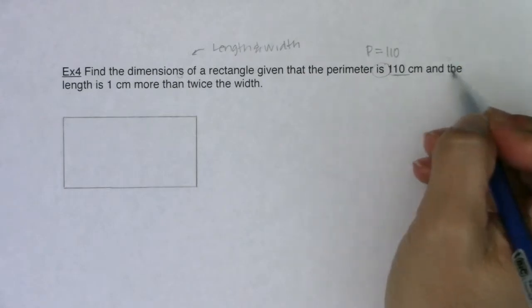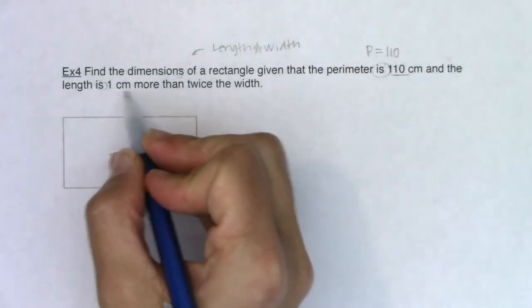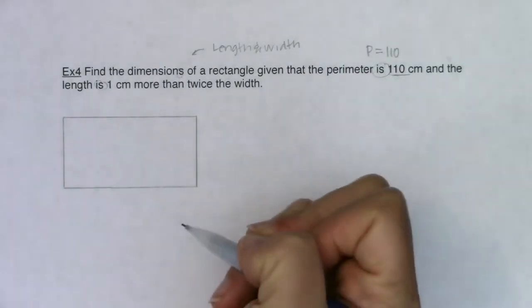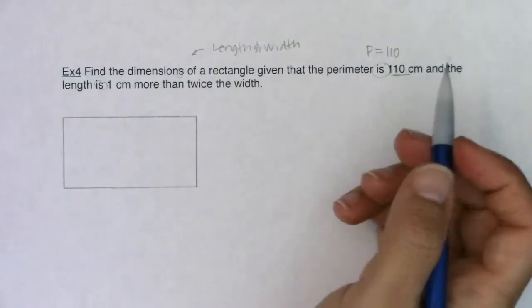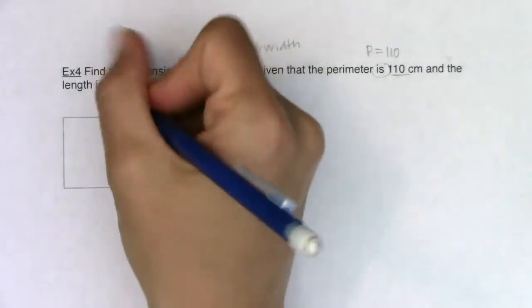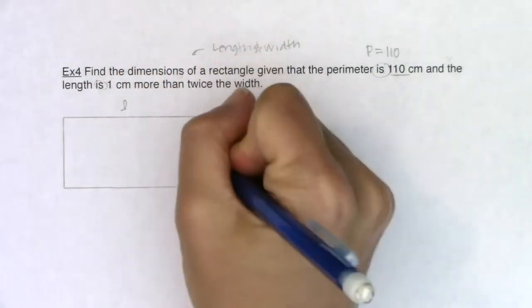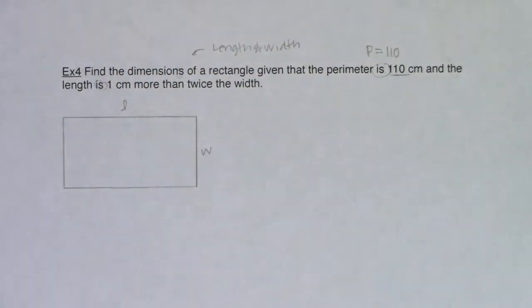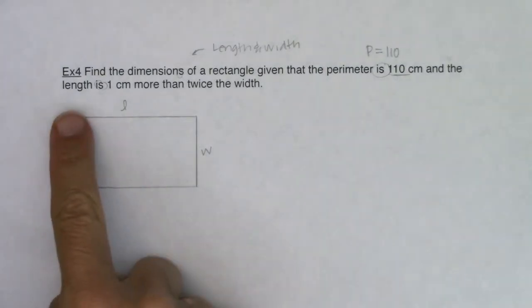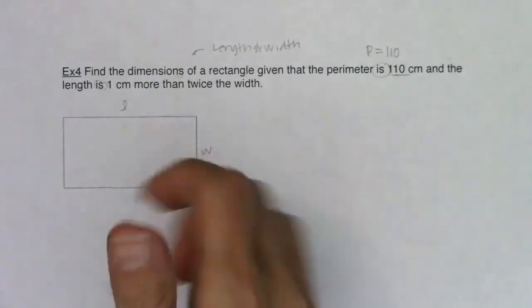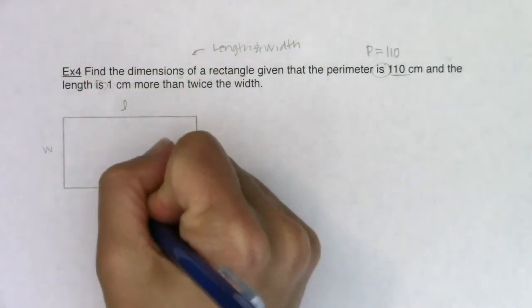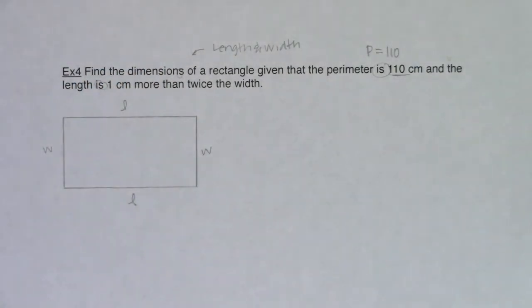And it says the length is one centimeter more than twice the width. So let's start to label some stuff in here because I need to find the length and I need to find the width. So I'll call this L and I'll call this W. And by properties of rectangles, if this side is L, this is also an L, this is a W, if this is a W. So I could label the entire thing if I wanted to.